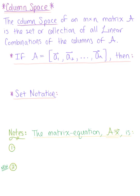We're now going to shift our thoughts to the column space of a matrix. Looking at the definition to get started, the column space of an M by N matrix A is the set or collection of all linear combinations of the columns of matrix A.